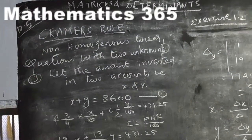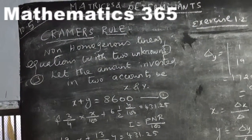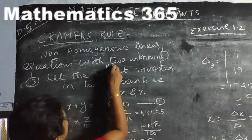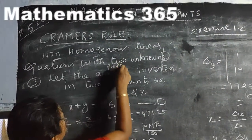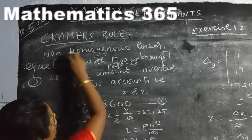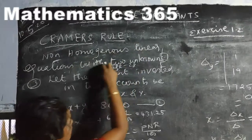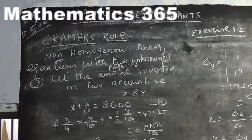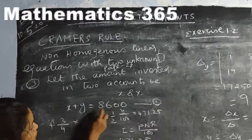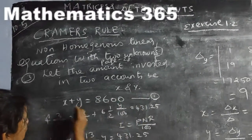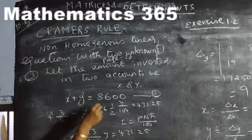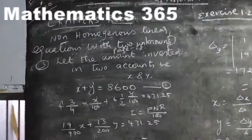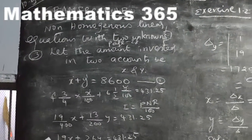Exercise 1.2, Thoughts Sum, page number 28. The topic is non-homogeneous linear equations with 2 unknowns, X and Y. Non-homogeneous means the numbers are present; linear means power is 1.